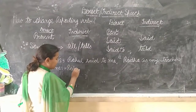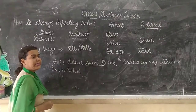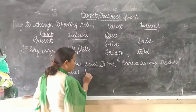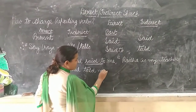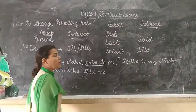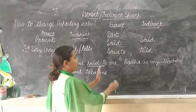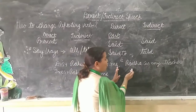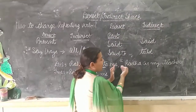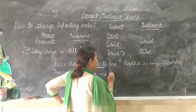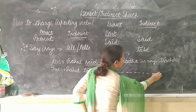Since it is 'said to', it will be changed to 'told'. The object will remain in the same place — 'me'. Now to remove the comma and inverted commas, we have to join the two sentences, and to join them we will use the conjunction 'that'.